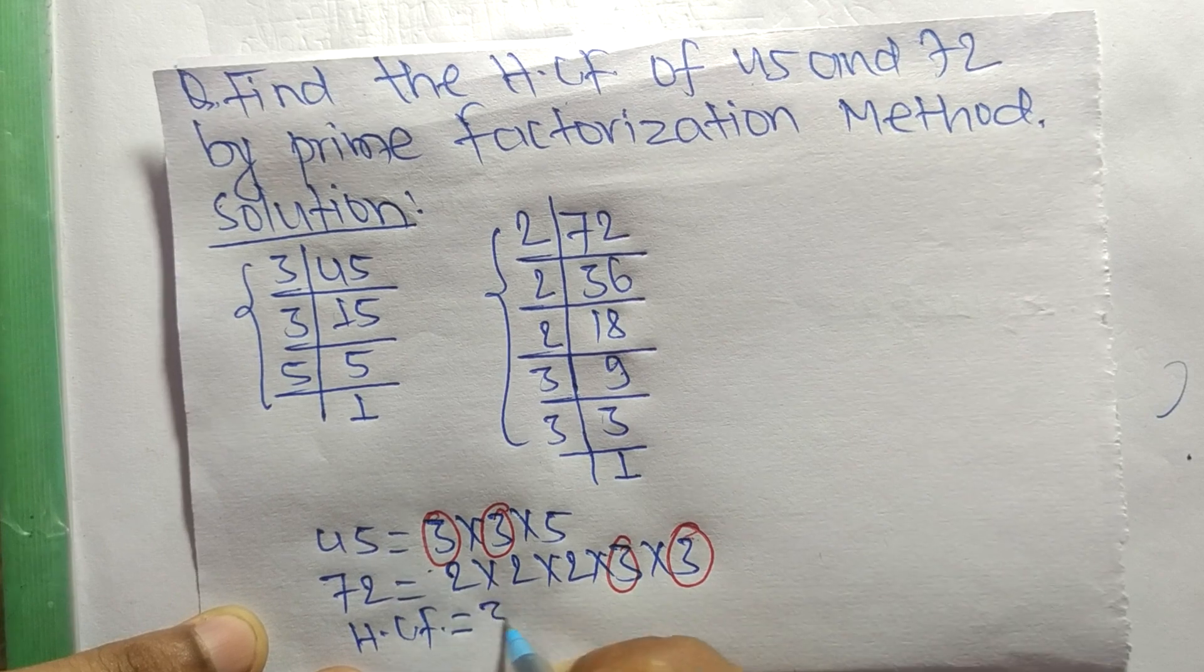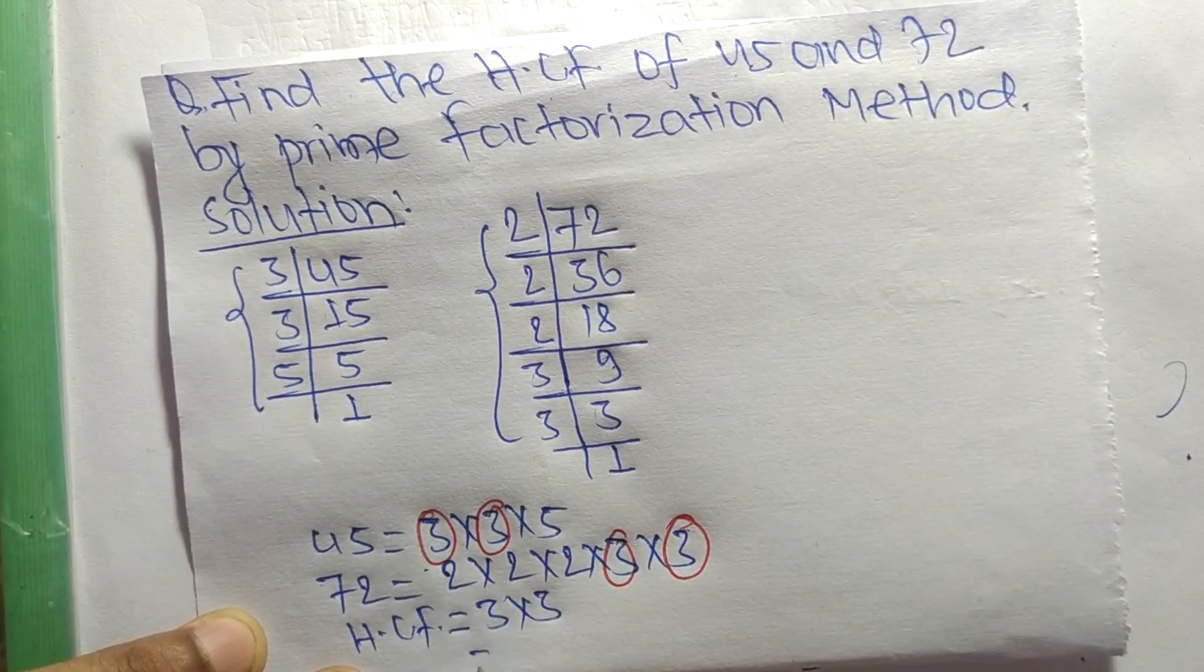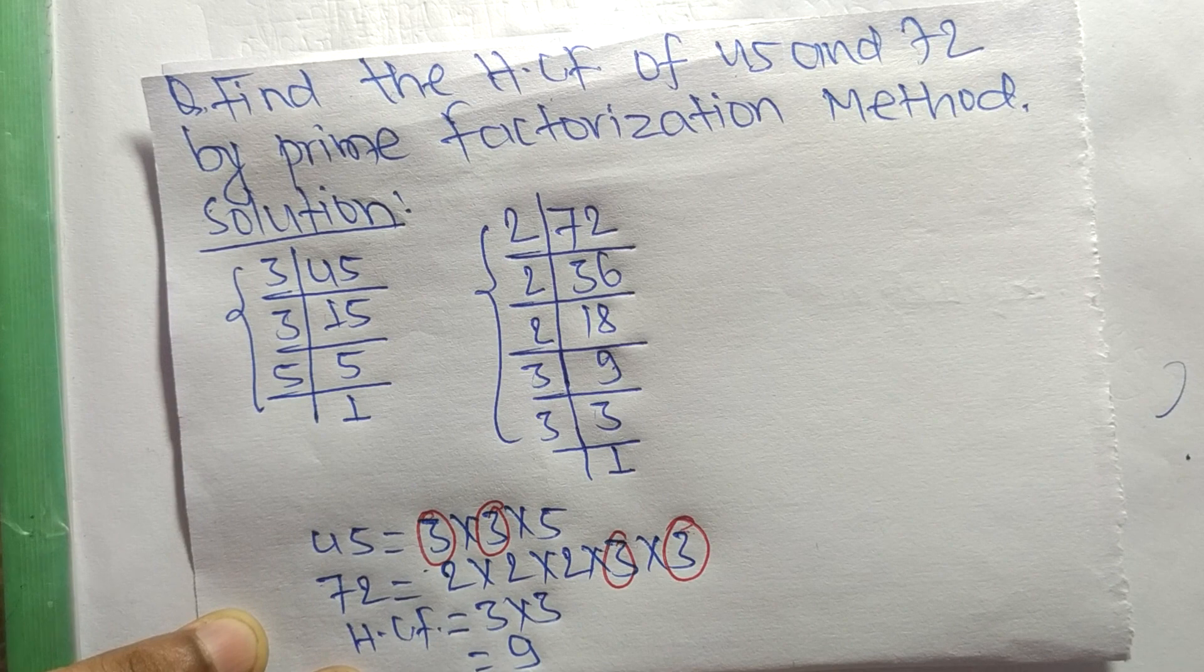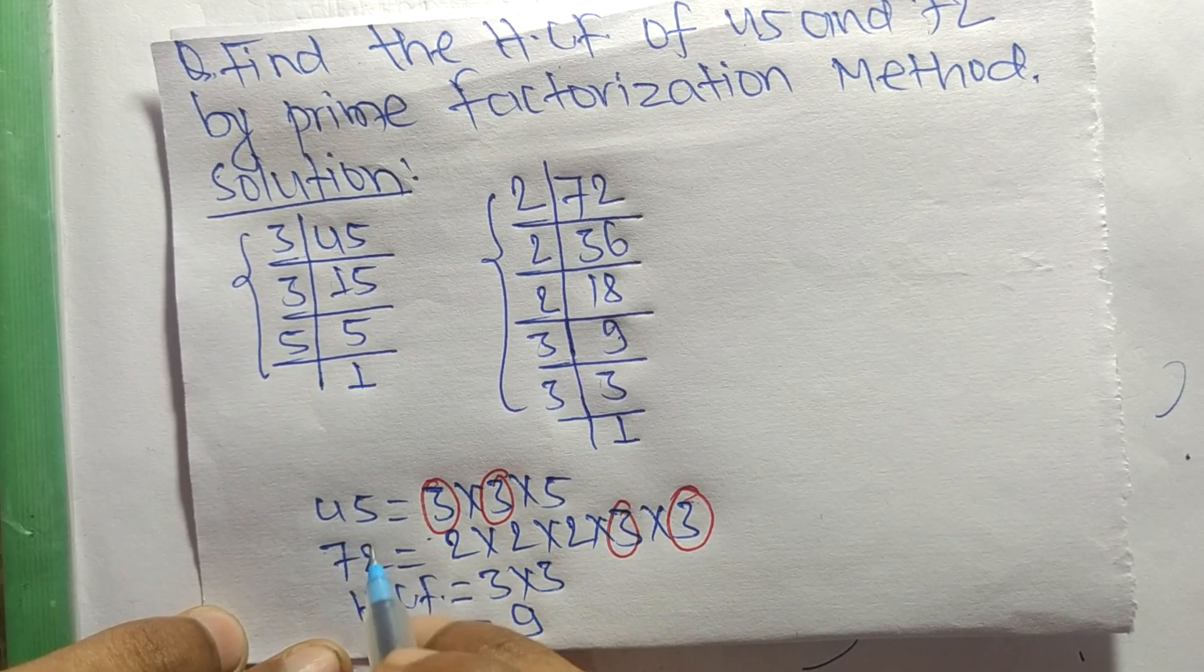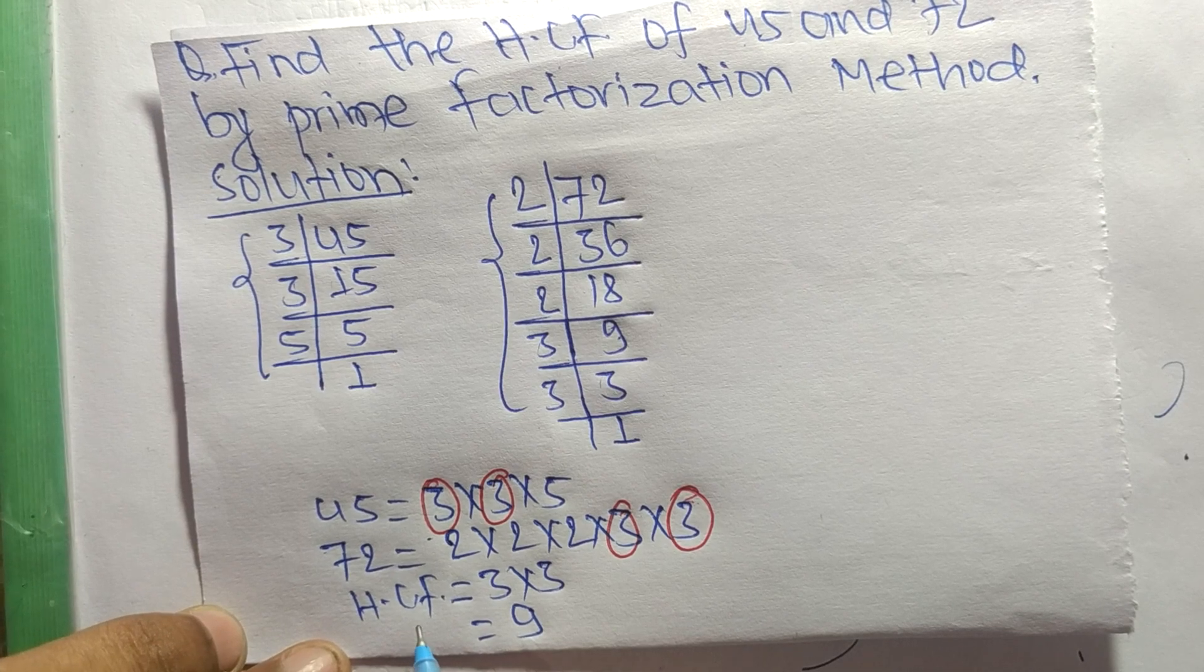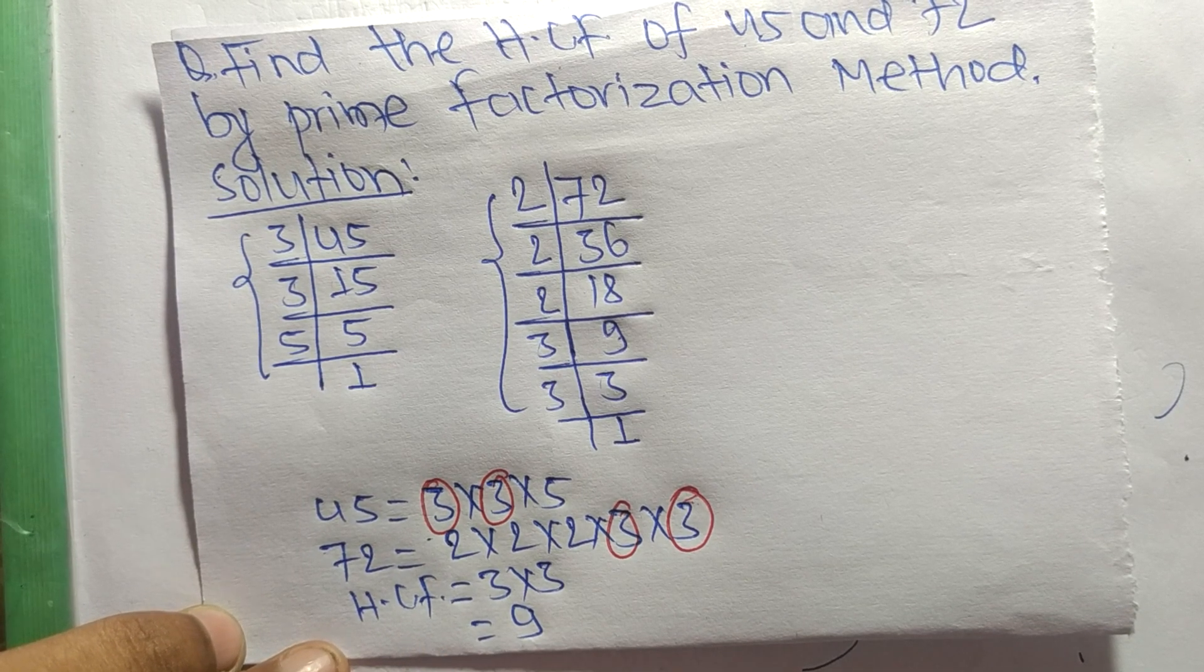Which are 3 and 3, so 3 times 3 equals 9. Therefore, 9 is the HCF of 45 and 72. Thanks for watching!